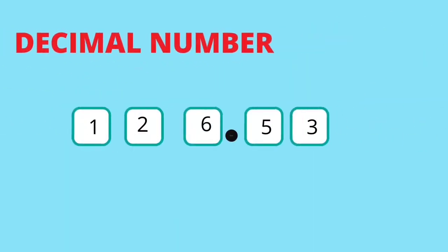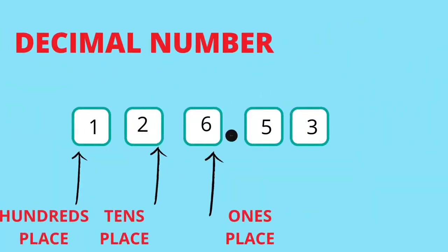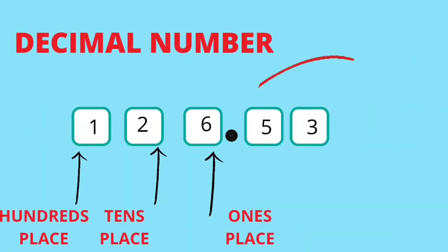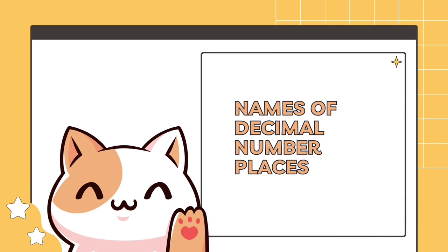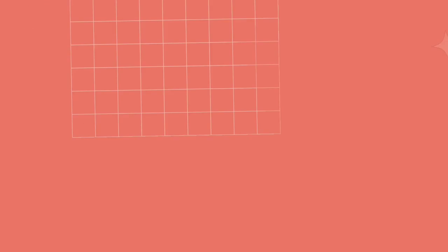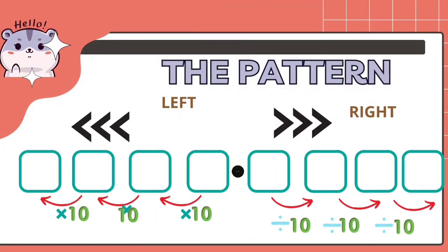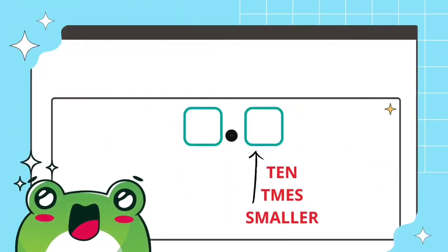That means 2 is in the tens place and 1 is in the hundreds place. But what about the digits to the right of the decimal point? We know they must be decimal places, but what are the names of those decimal places and what value do they count? Looking back at our number place pattern, each time we move to the left, the new number place counts amounts 10 times bigger than the previous. So each time we move to the right, the number place should count amounts 10 times smaller. Since the ones place counts by ones, the number place to the right should count ten times smaller than one.